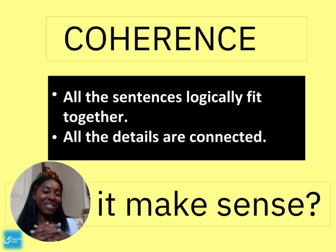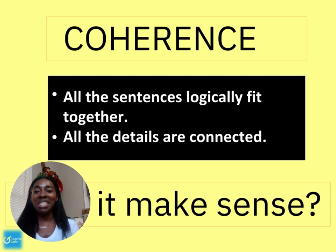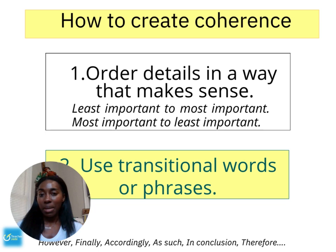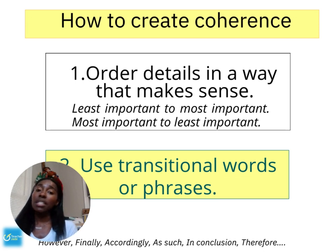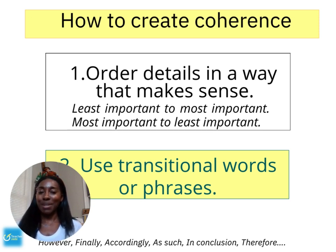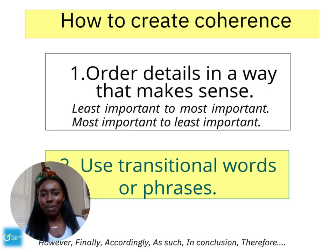Coherence means all your sentences logically fit together. You have to make sure your details are connected so it doesn't read like a list. You can create coherence by ordering details from least to most important or vice versa, and by using transitional words or phrases — also called conjunctive adverbs if you love grammar.